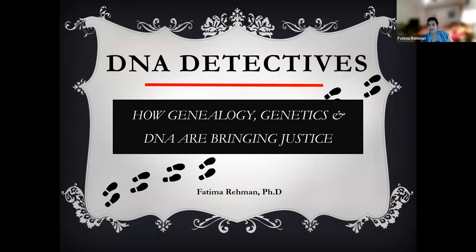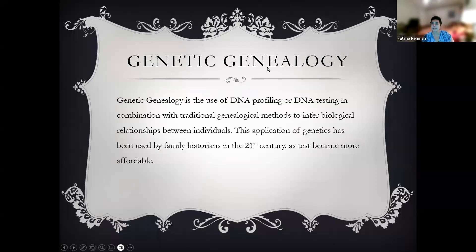Hi again. Here is the second part of the series that I started last week, where we are talking about how genealogy, genetics, and DNA are used by forensic scientists and law enforcement to solve otherwise unsolvable cases. We talked about the basics of DNA and the different methods that can be used to get information about DNA sequencing and fingerprinting last week, and I will link that lecture down below.